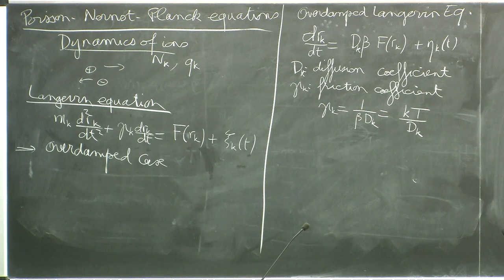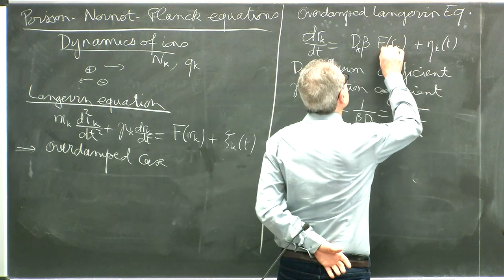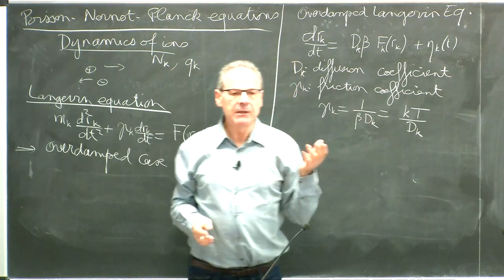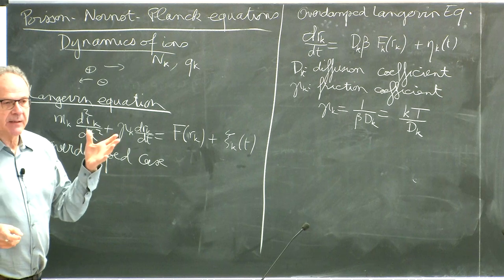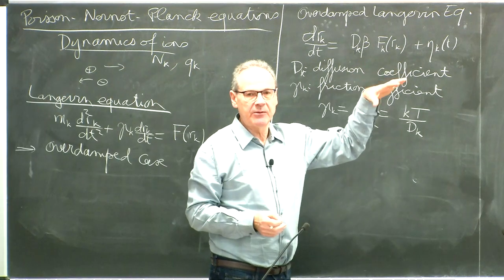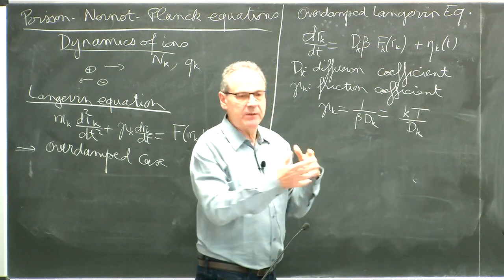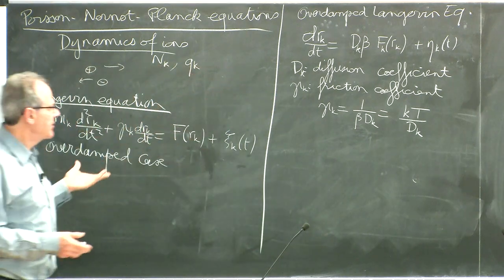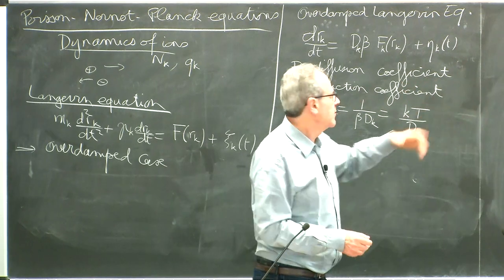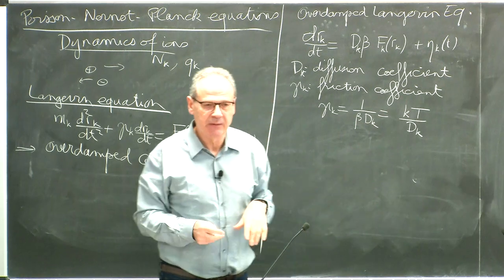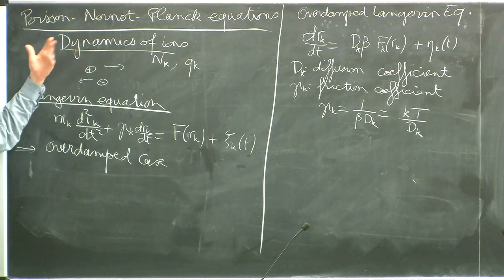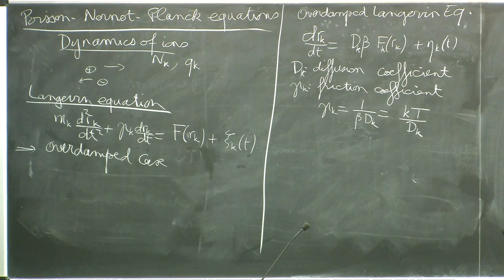The force F acting on particle k is the electrostatic force — the electric force. Of course, each particle has a different force, and the force can depend on the position of all other particles — everything is coupled. But we will see that in the Nernst-Planck equation it's a kind of mean field approximation, a dynamical mean field approximation equivalent to Poisson-Boltzmann in the static case.